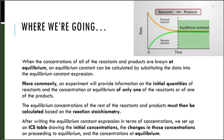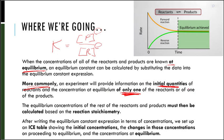When the concentrations of all the reactants and products are known at equilibrium, an equilibrium constant can be calculated by substituting the data into the equilibrium constant expression — K equals the concentration of the products over the concentration of the reactants raised to the stoichiometric coefficient. More commonly, however, an experiment will provide information on the initial quantities of reactants and the concentration at equilibrium of only one of the reactants or products. The equilibrium concentrations for the rest must then be calculated based on the reaction stoichiometry.